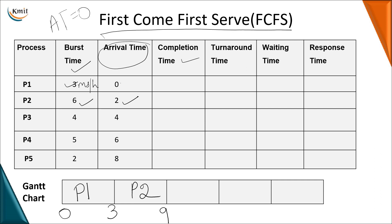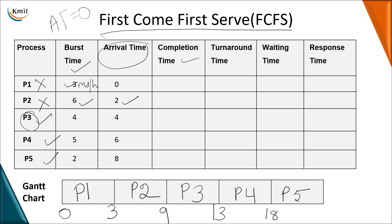After the ninth millisecond, P2 has completed execution. At the ninth millisecond, the processes present in the ready queue are P3, P4, and P5. Among these, P3 arrived first, so P3 is selected. Its burst time is four milliseconds, giving us 13. Next is P4, which requires five milliseconds, giving us 18. Then P5, giving us 20. To verify the Gantt chart, the sum of all burst times should equal 20.